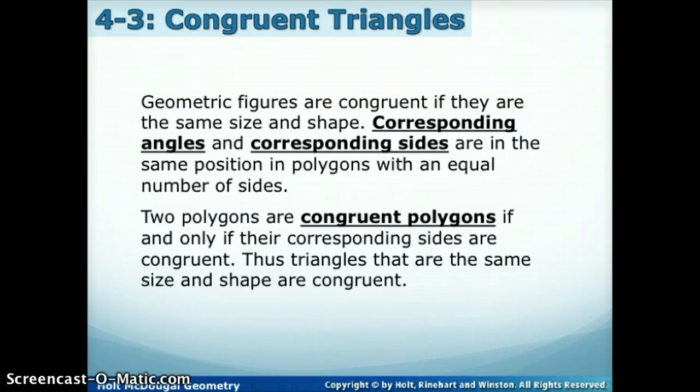Geometric figures are congruent if they are the same size and shape. Corresponding angles and corresponding sides, remember corresponding meant matching, so that means that they're in the same position in their polygons with an equal number of sides. So two polygons are congruent if and only if their corresponding sides are congruent, thus triangles that are the same size and shape are congruent.